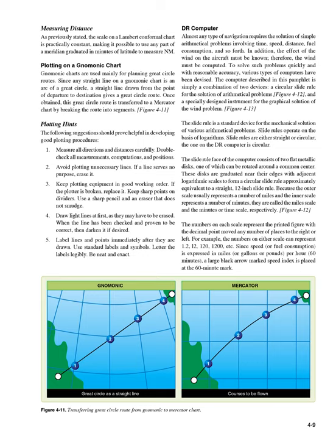Plotting on a gnomonic chart: gnomonic charts are used mainly for planning great circle routes. Since any straight line on a gnomonic chart is an arc of a great circle, a straight line drawn from the point of departure to destination gives a great circle route. Once obtained, this great circle route is transferred to a Mercator chart by breaking the route into segments. Figure 4-11. The following suggestions should prove helpful in developing good plotting procedures: 1. Measure all directions and distances carefully. Double-check all measurements, computations, and positions.